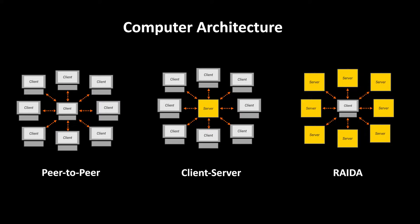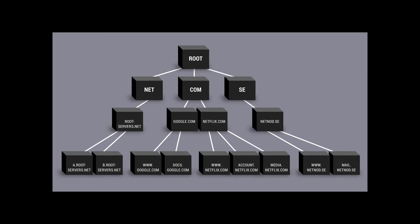CloudCoin's architecture is called RAIDA — the Redundant Array of Independent Detection Agents. This system has been working since 2016 and has never gone down and has never had any coins lose their integrity. RAIDA is based on another system called the Root DNS system, which was created in 1985. Since it was created, it has never gone down or been compromised. The Root DNS system is something that every hacker, every government, and every tech giant would love to take control of, because whoever runs the Root DNS servers can control the traffic of the world.